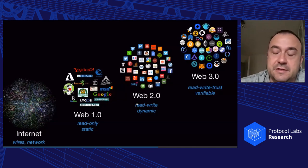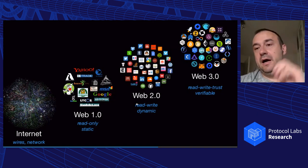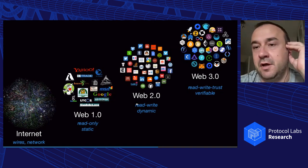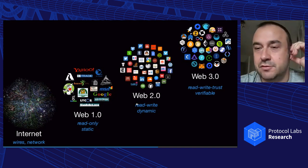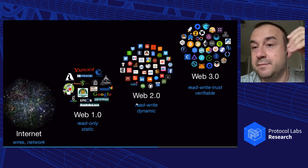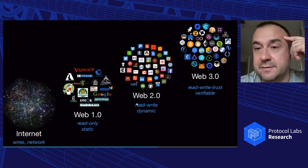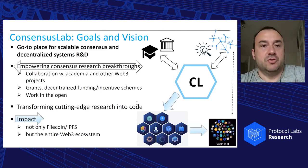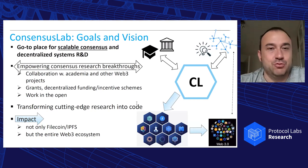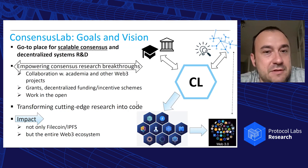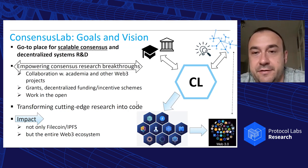Consensus Lab is essentially looking into building a layer of strong consistency — and a bit weaker consistency is also in scope — that would power and act as a backbone of Web3. Consensus Lab is supposed to be a go-to place for scalable consensus and decentralized systems R&D.